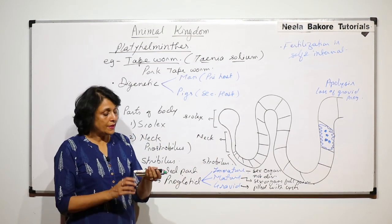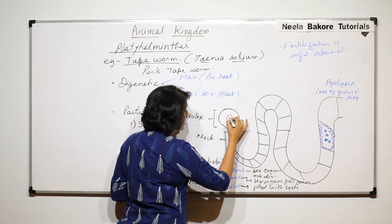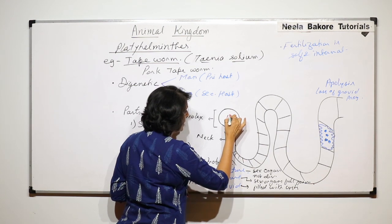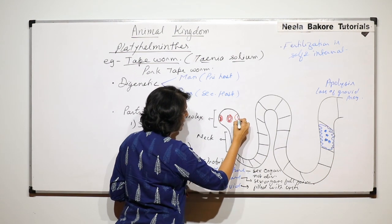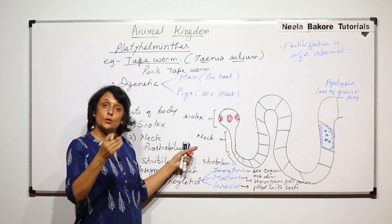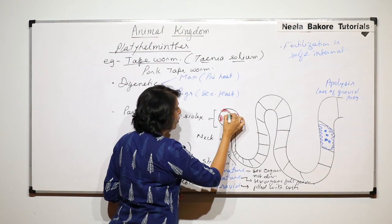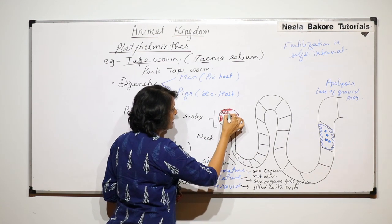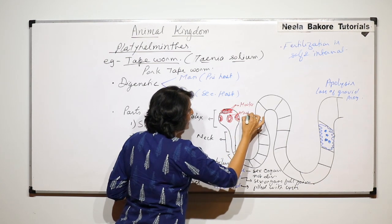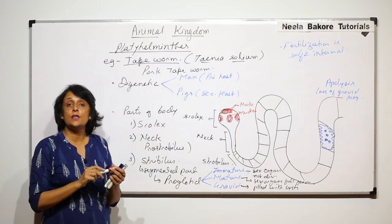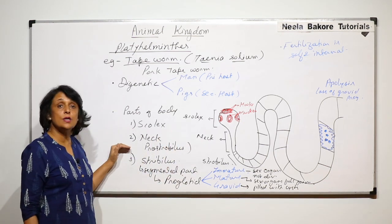Now let us come back to the scolex part, that is this head-like structure. This structure has hooks and suckers. There are four suckers. This is one sucker which is completely visible to us, half part is visible to us, here is the third one, half of this also is visible, and the fourth one is on the back side. So there are four suckers and there are two rows of hooks. And their main function is the attachment part, so they will help in attachment of the tapeworm in our intestine.